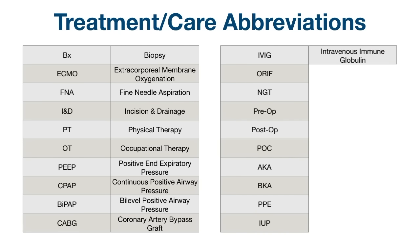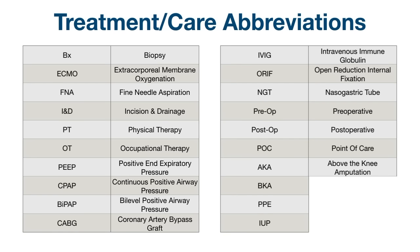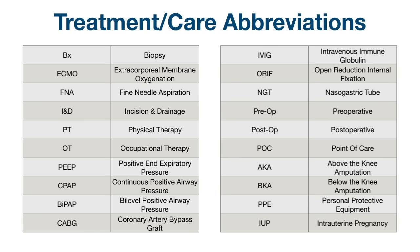ORIF: open reduction internal fixation. NGT: nasogastric tube. Preop: preoperative. Postop: postoperative. POC: point of care. AKA: above the knee amputation. BKA: below the knee amputation. PPE: personal protective equipment. IUP: intrauterine pregnancy.